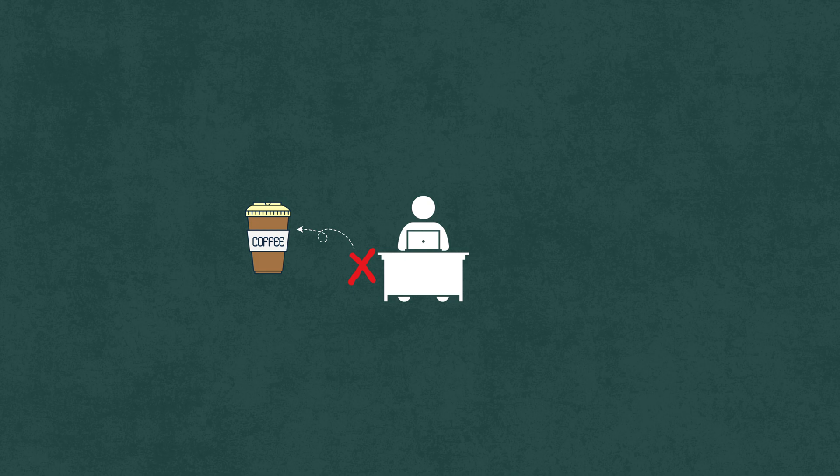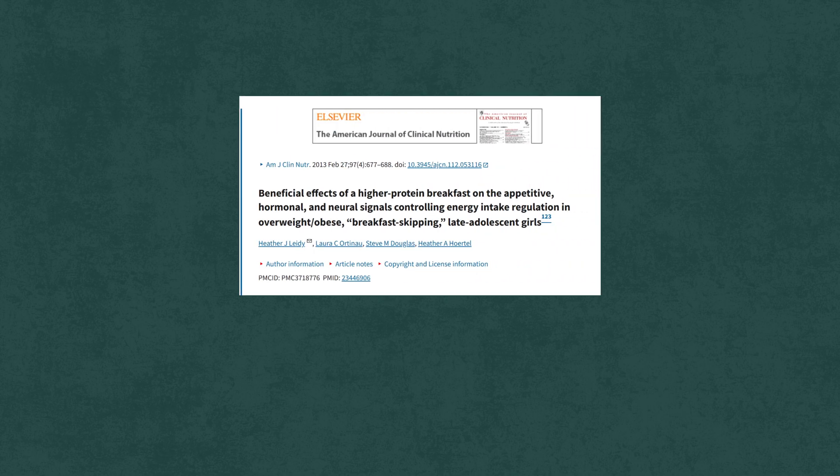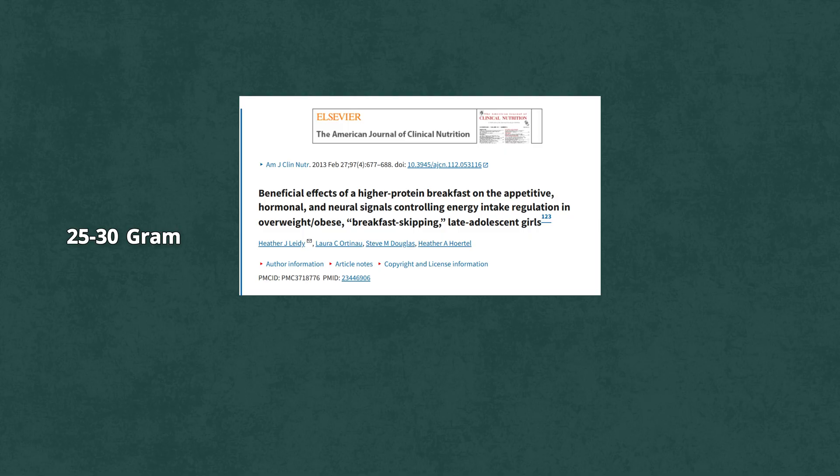A 2018 study from the American Journal of Clinical Nutrition found that people who ate a high-protein breakfast, 25 to 30 grams, had better memory recall, fewer cravings, and more consistent energy than those who didn't. Translation, two eggs or a scoop of whey protein can literally rewire how your brain performs for the day.